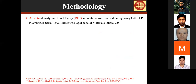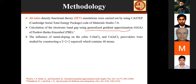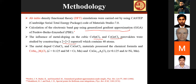For methodology, density functional theory simulations are carried out using the VASP code. Calculation of the electronic band gap was done using the GGA approach of Perdew-Burke-Ernzerhof. The influence of metal doping of cubic cesium tin chloride and cesium germanium chloride are studied by constructing a 2×2×2 supercell. The doped cesium tin chloride and cesium germanium chloride possess the chemical formula with x equal to 0.125 for both compounds.